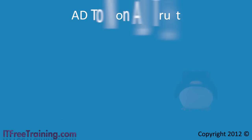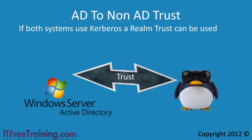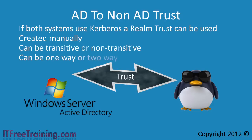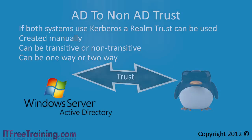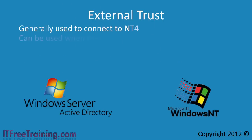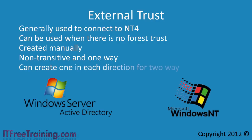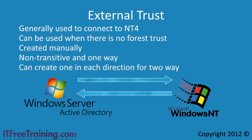In some cases you may create a trust relationship between Active Directory and a non-Active Directory system. Assuming both systems use Kerberos, you can create what is called a realm trust. These are created manually and can be either transitive or non-transitive, one way or two way. The last trust you may come across is an external trust. An external trust is generally used to connect to a Windows NT 4 domain. These trusts need to be created manually and are non-transitive. They are also one way only, but you can make them two way by simply creating two trust relationships, one going in each direction.